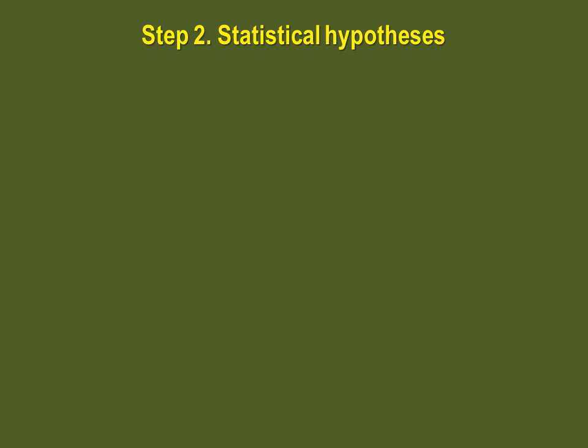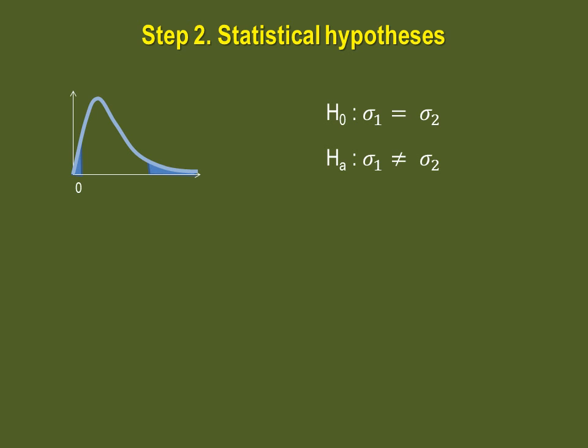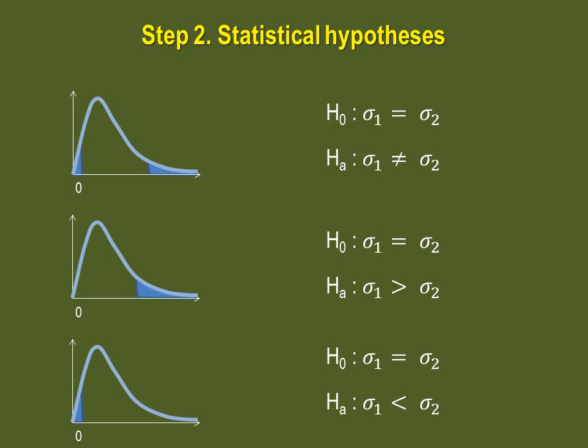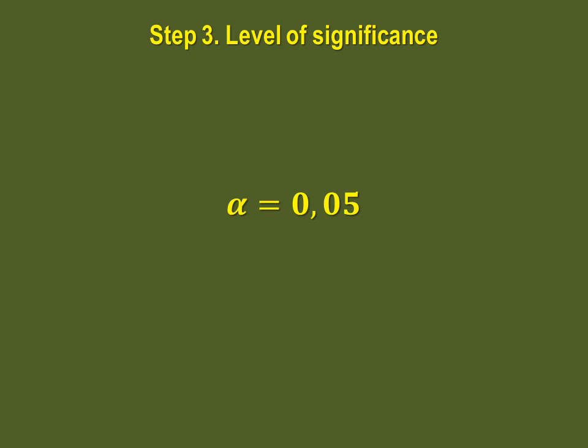Now we can determine our statistical hypotheses. We can have a two-tailed test or a right-tailed test, each with their respective statistical hypotheses — we will come back to the left-tailed test at the end of the video. Our question asks if the variances are simply different, so we will choose the two-tailed statistical hypotheses. As usual, because nothing else was stated, our level of significance will be 0.05.